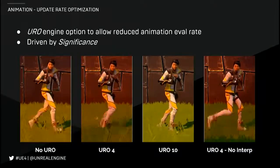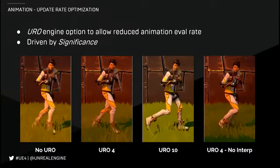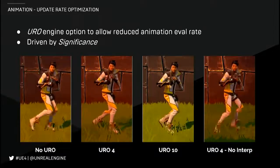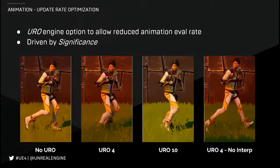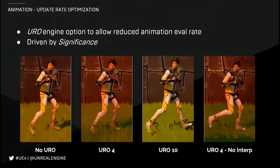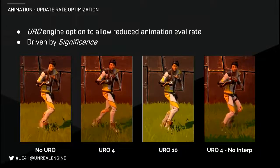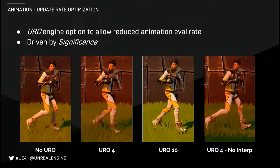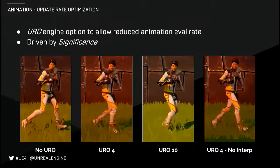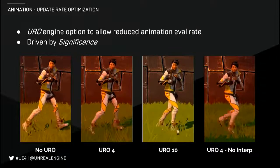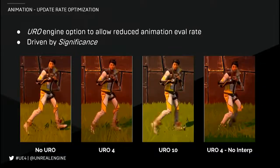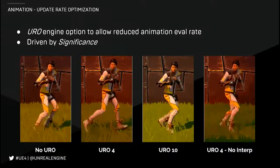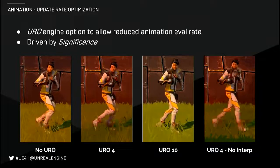Another really useful tool is what we call update rate optimization. Rather than running the whole animation logic every frame, we run it at less than the frame rate of the game. With no update rate optimization, we evaluate everything every frame. But if we run the animation logic once every four frames and interpolate between results, it still looks pretty good — you can turn that on for characters that are not right up in your face. We can also choose whether or not we interpolate between results; not interpolating is a little bit faster but looks janky. We tend to only use that for the lowest significance on platforms where we really need it. This is driven by significance.